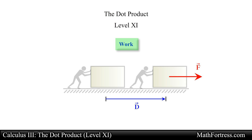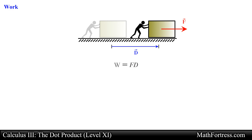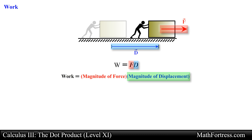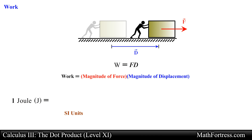As a result, the definition of work is based on these observations. We define the work W done by a constant force F that points in the same direction as the displacement D of an object as the product of the force and the displacement magnitude. With this definition the work done is greater if either the force F or the displacement D is greater. The SI unit of work is the joule, abbreviated with the letter J. Since we are multiplying a force measured in newtons by a distance measured in meters, one joule is equal to one newton times meter.